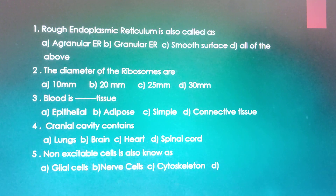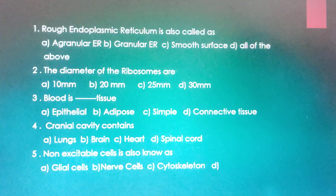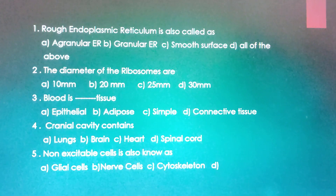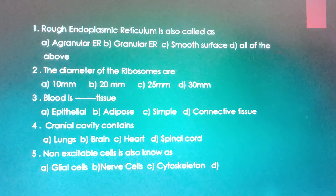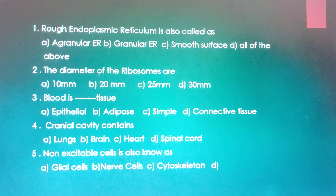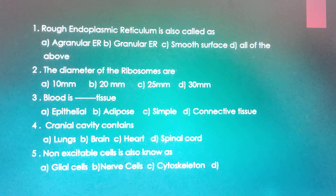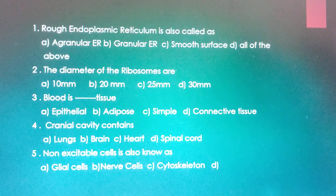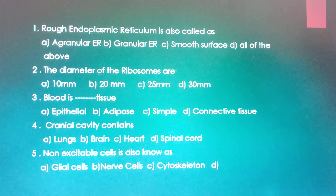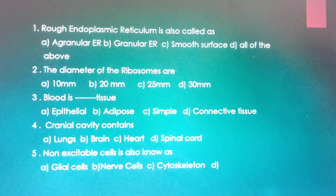Blood is what type of tissue? Epithelial tissue, adipose tissue, simple tissue, or connective tissue. The correct answer is connective tissue. D is the correct answer for this.